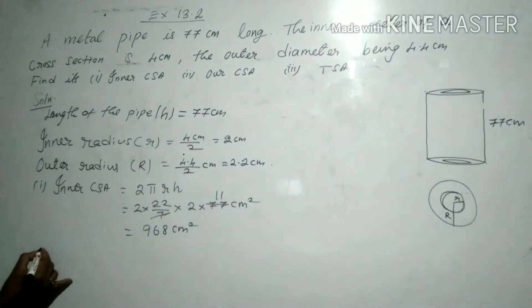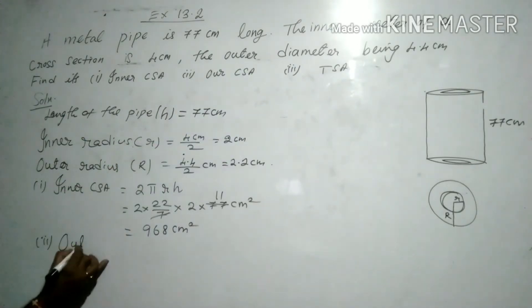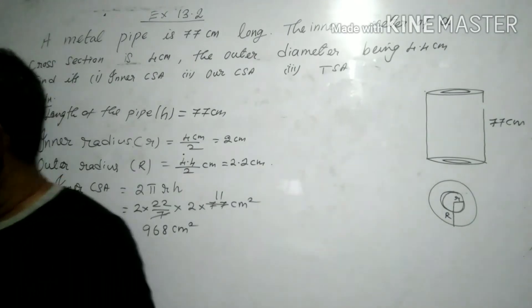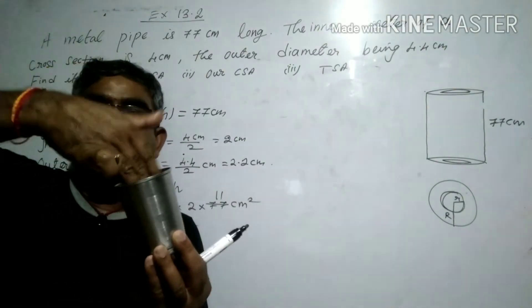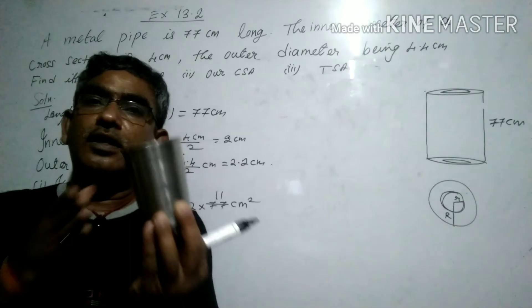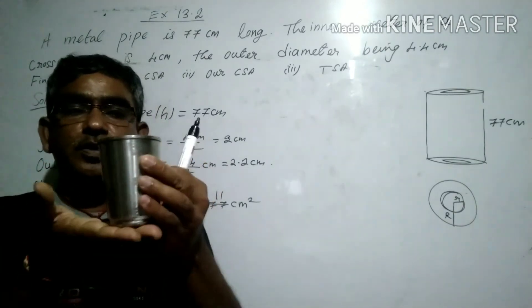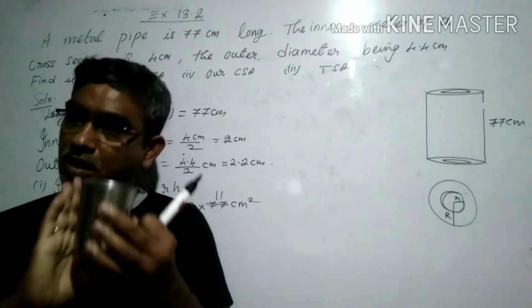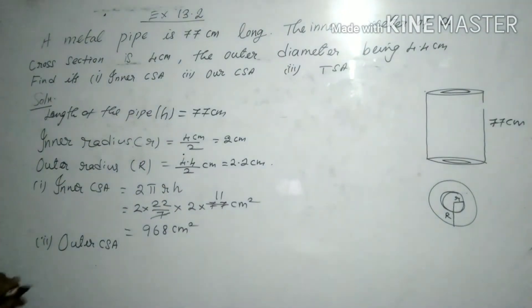Now the second part: outer CSA. If you think of the cylinder, the inside surface area is the inner CSA, and the outside surface area is the outer CSA. The total surface area includes the bottom area, top area, inner CSA, and outer CSA — all together.